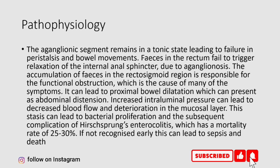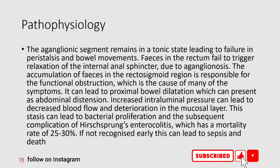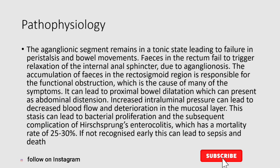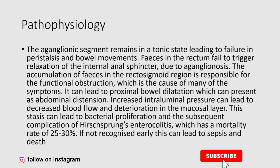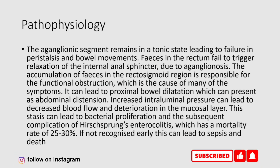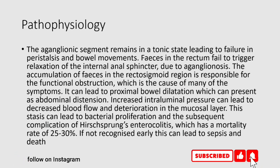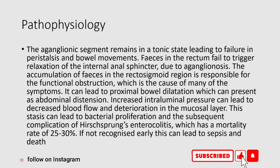Pathophysiology: The aganglionic segment remains in a tonic state, leading to failure in peristalsis and bowel movements. Feces in the rectum fail to trigger relaxation of the internal anal sphincter due to agonglionosis. The accumulation of feces in the rectosigmoid region is responsible for the functional obstruction, which is the cause of many of the symptoms.